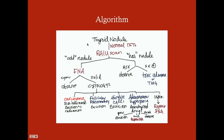Here's the algorithm: after normal thyroid function tests, an RAIU scan is optional in clinical practice but on the USMLE the next best step is fine needle aspiration. If cytology shows carcinoma, treat with excision plus or minus radiation depending on carcinoma type. Follicular abnormality—excise. Hurthle cells—excise. Adenomatous hyperplasia—antithyroid drugs; if the nodule shrinks, observe; no change, repeat FNA; if it grows, excise. Indeterminate—repeat FNA.